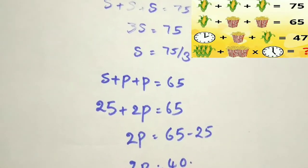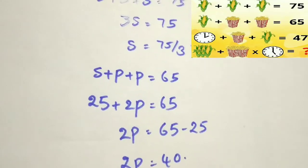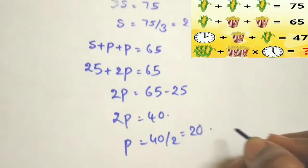Transfer this 25 to that side, so 2P is equal to 40, then popcorn value is equal to 40 by 2 is equal to 20. You will get popcorn is equal to 20 and sweet corn is equal to 25.